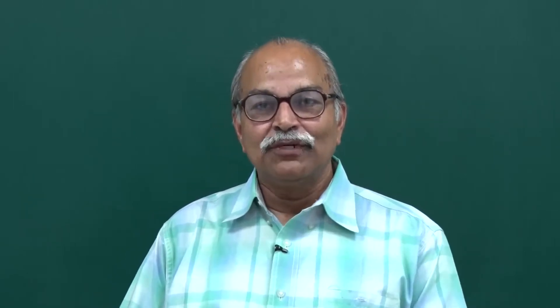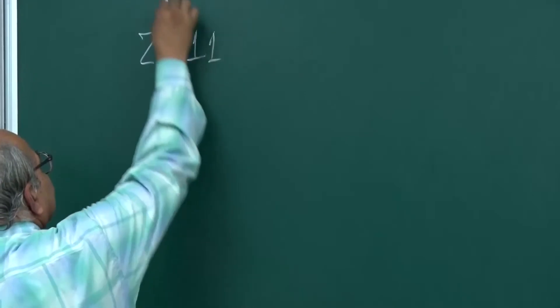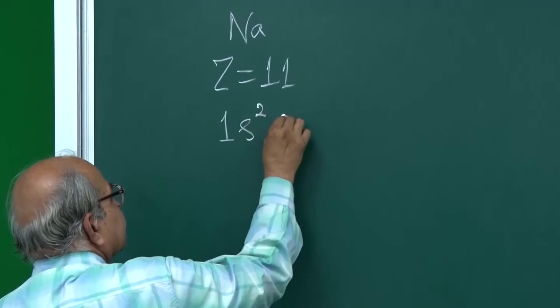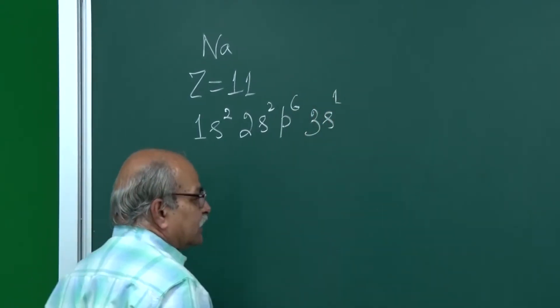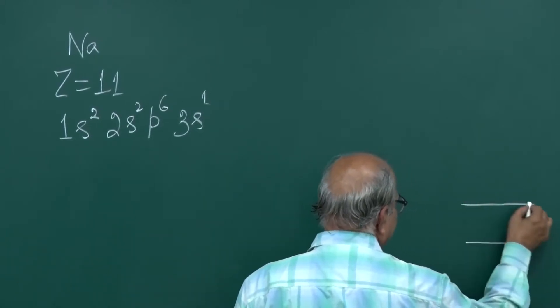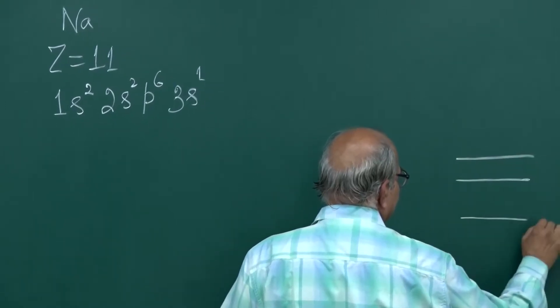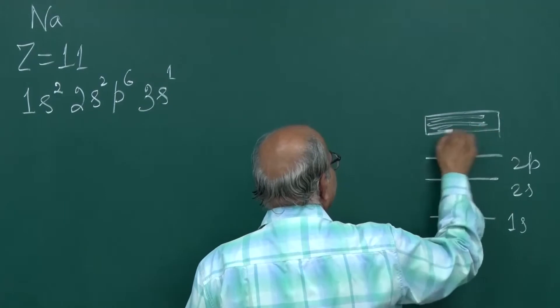In the previous lecture, we discussed how in a solid, energy levels for electrons are grouped in different bands. Taking the example of sodium, Z = 11, the configuration is 1s² 2s² 2p⁶ 3s¹. The 1s level is almost sharply defined, 2s is also almost sharply defined with little spread, 2p is internal, and 3s is reasonably spread. Then you have 3p and beyond.